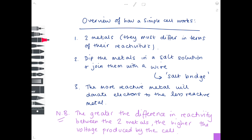If you actually connect this simple cell with a complete electrical circuit — basically sealing it off with wires — you'll generate a current. That's only if you get a complete electrical circuit, not just a simple beaker with your electrodes and your salt bridge.